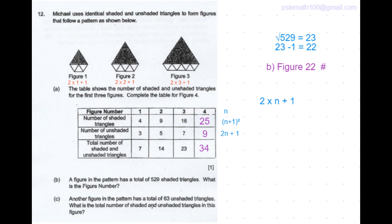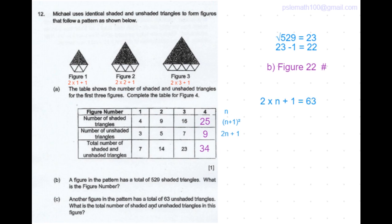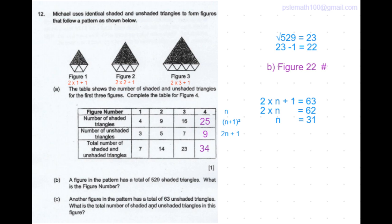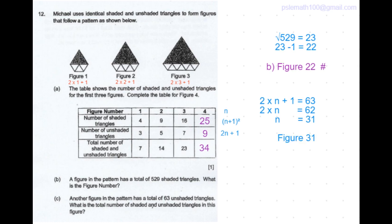The number of unshaded triangles is given to be 63 which means 2 times n plus 1 is equal to 63. So 2n is equal to 62. So we get the value of n to be equal to 31 which means this is figure number 31.